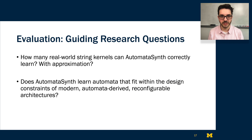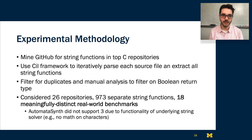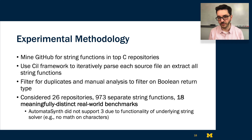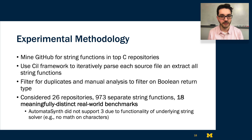In terms of evaluating AutomataSynth, we are guided by two research questions: how many real world kernels can AutomataSynth correctly learn, possibly with approximation? And does AutomataSynth learn automata that fit within the design constraints of modern automata-derived reconfigurable architectures? In our methodology, we mine GitHub for string functions in top C repositories, parse and extract string functions, filter for duplicates, and find those that fit our target function signature. After looking through something on the order of a thousand separate functions from 26 repositories, we identified 18 meaningfully distinct real-world benchmarks.